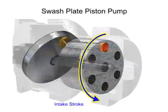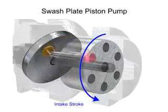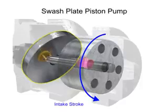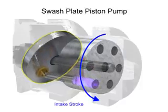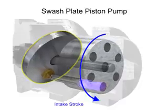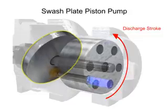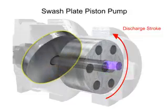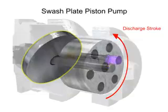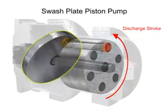On the intake stroke, a spring ensures the pistons pull back and maintain contact with the swash plate, causing fluid to fill the empty cavity left behind. On the discharge stroke, the angle of the swash plate forces the pistons back inside the piston block and discharges the fluid. The greater the slant on the swash plate, the further the pump pistons move and the more fluid they transfer.